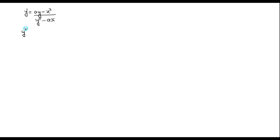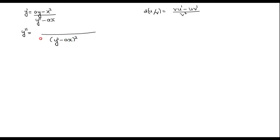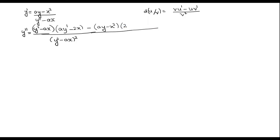The second order derivative y'' is found using the quotient rule: derivative of u/v = (v·u' − u·v') / v². So y'' = [(y² − ax)·(ay' − 2x) − (ay − x²)·(2y·y' − a)] / (y² − ax)².